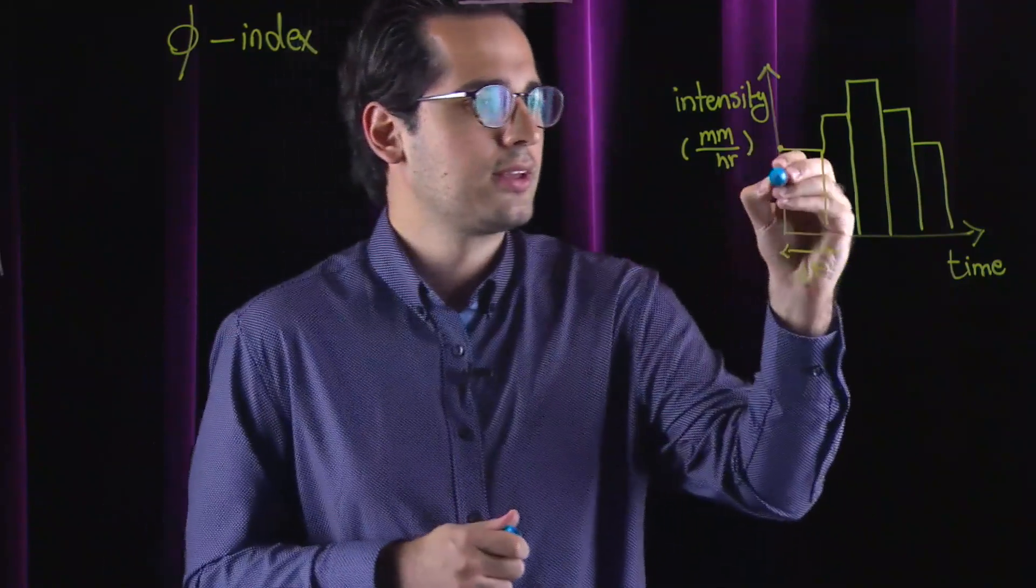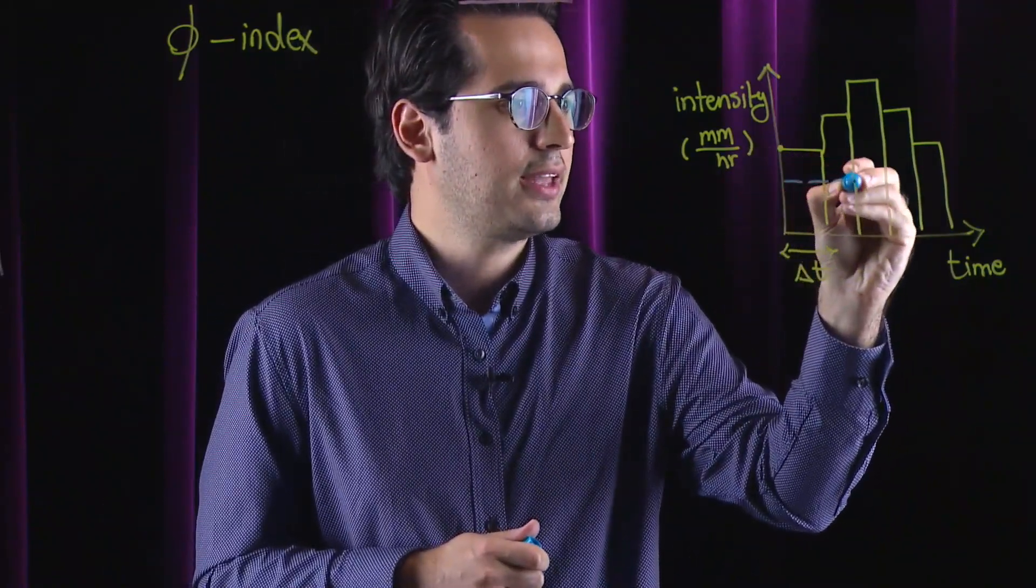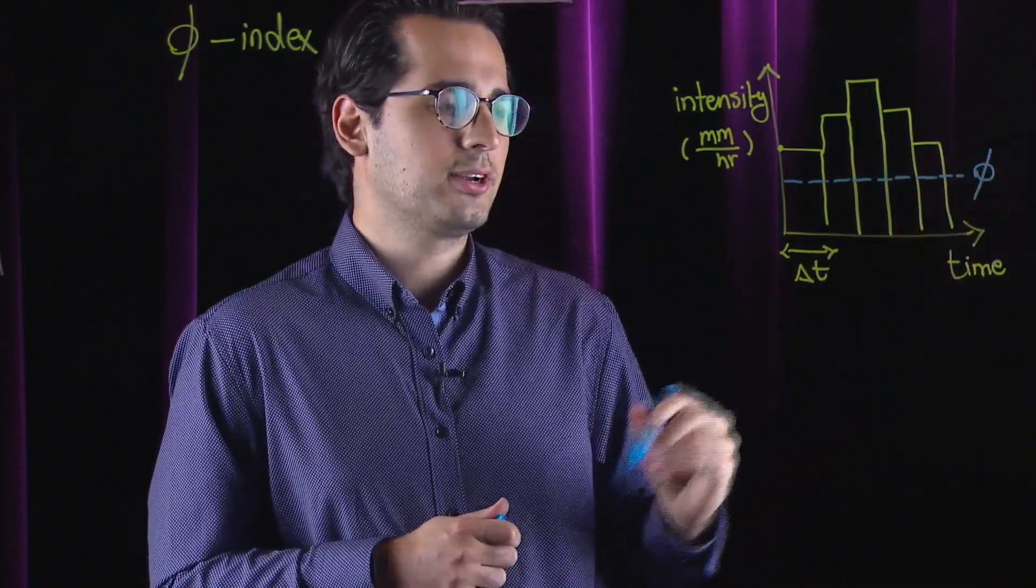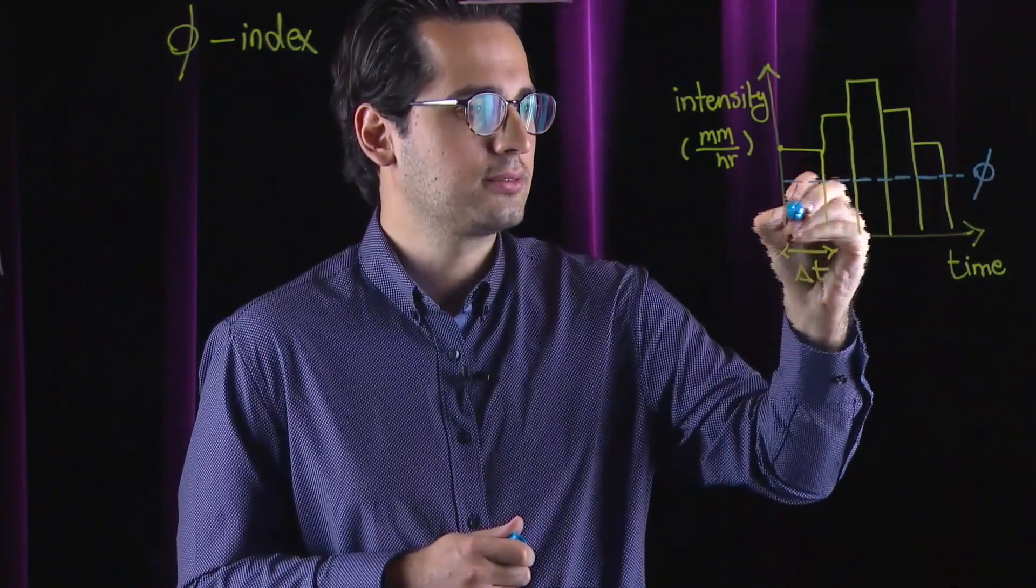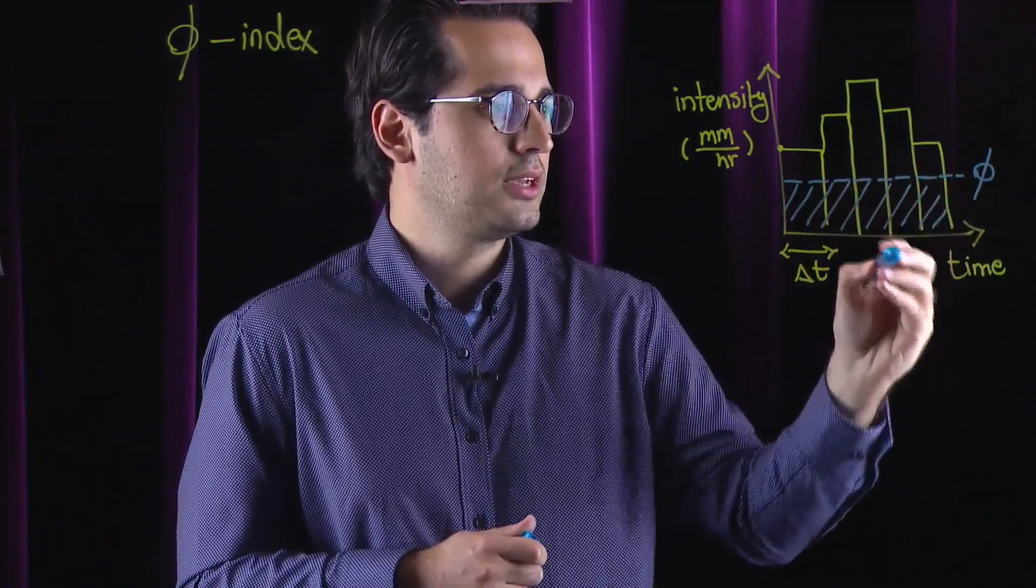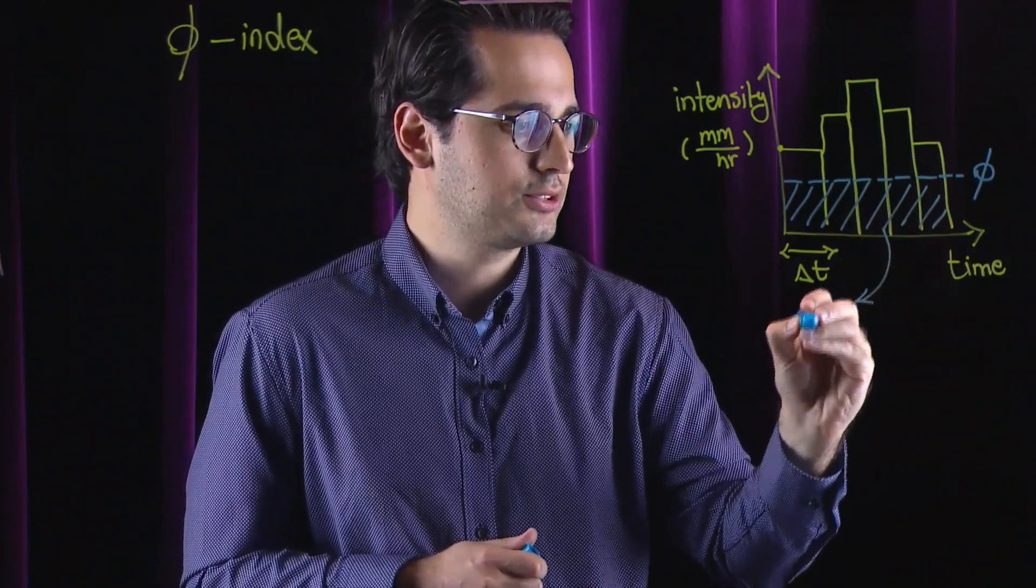So, if Phi index, or that constant capacity, or Phi, is over here, this area that I'm going over right now is going to be the area of your abstractions.